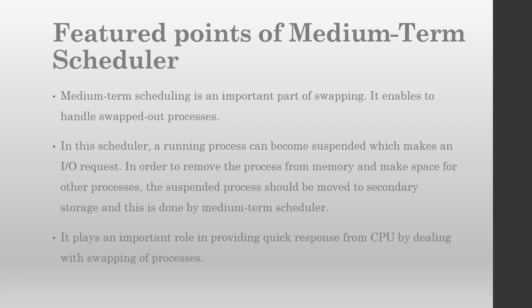If you have swept-out processes, the medium term scheduler handles them. When you have a running process that becomes suspended, or if a process makes an I/O request and becomes a suspended process, the medium term scheduler removes it from main memory, passes it to secondary memory, and creates space for other processes. The medium term scheduler plays an important role in providing quick response from the CPU by dealing with swapping of processes — quickly handling swept-out processes and making space for other processes to execute.